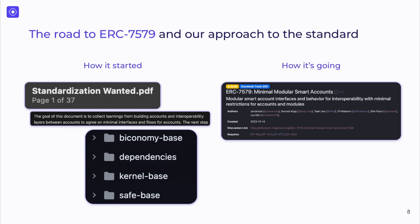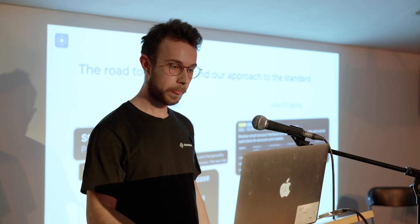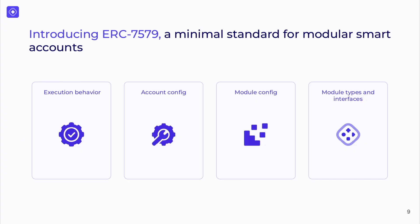Towards the end of last year in December, we announced ERC 7579 together with co-authors from ZeroDev, Biconomy, and OKEx. ERC 7579 has four key domains: execution, account config, module config, and modules themselves.